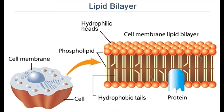Based on their interaction with the membrane, membrane proteins are broadly categorized into integral and peripheral proteins. However, there are some proteins that bind to membranes through a covalently bound lipid anchor, which inserts into the bilayer. These are called lipid anchored proteins.